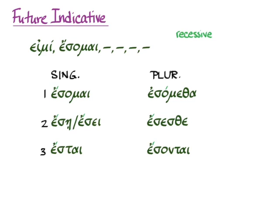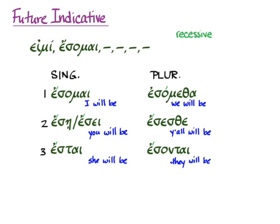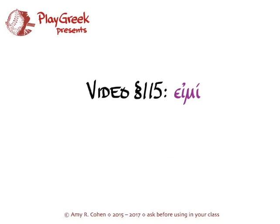And so we get ἔσομαι, I will be; ἔσῃ or ἔσει, you will be; ἔσται, she will be; ἐσόμεθα, we will be; ἔσεσθε, y'all will be; and ἔσονται, they will be. And that's it. Those are the forms of Attic Greek's εἰμί, the verb to be, and now you are ready to use it all the time.